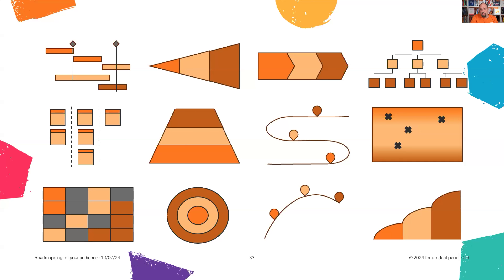Then we have some really simple ones: a chevron, a road, or a moonshot — sequential, really simple. Sometimes when you've got a senior audience or an external audience, that's the best way to go to keep the message simple. We all know reality is more complicated, but for storytelling and getting people aligned on a direction of travel, that's the best option.